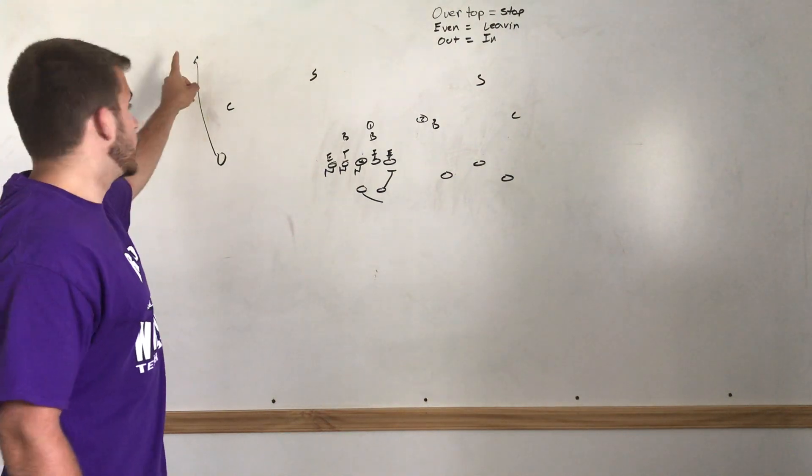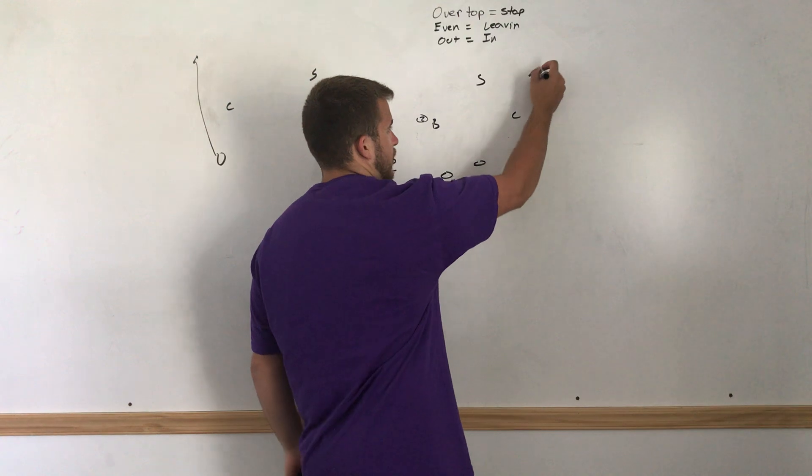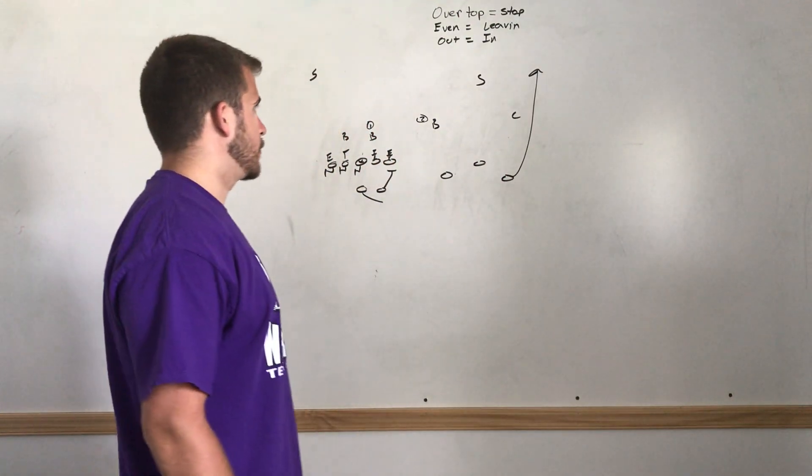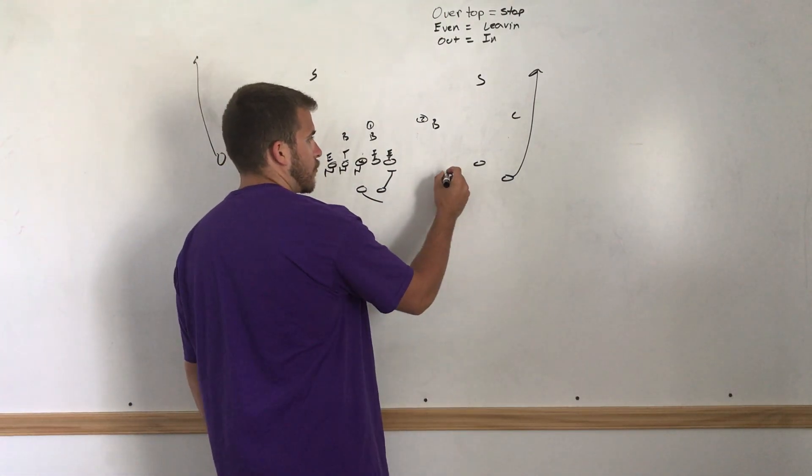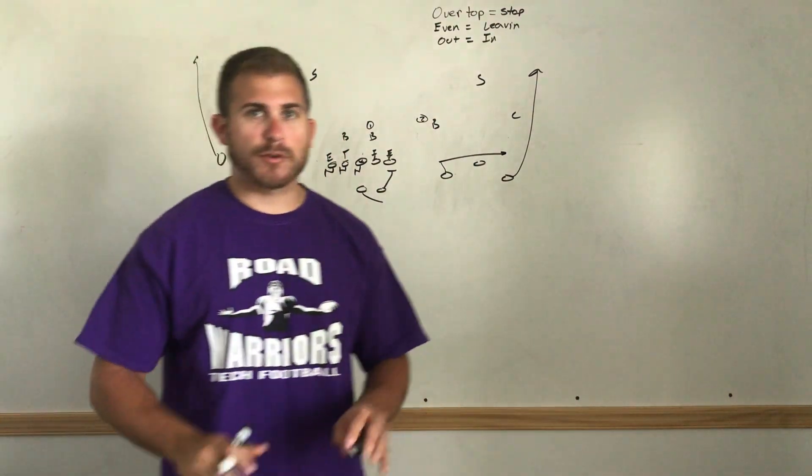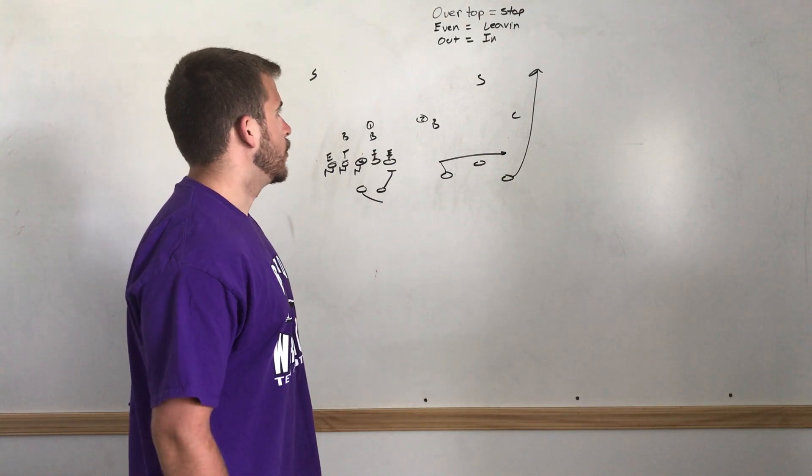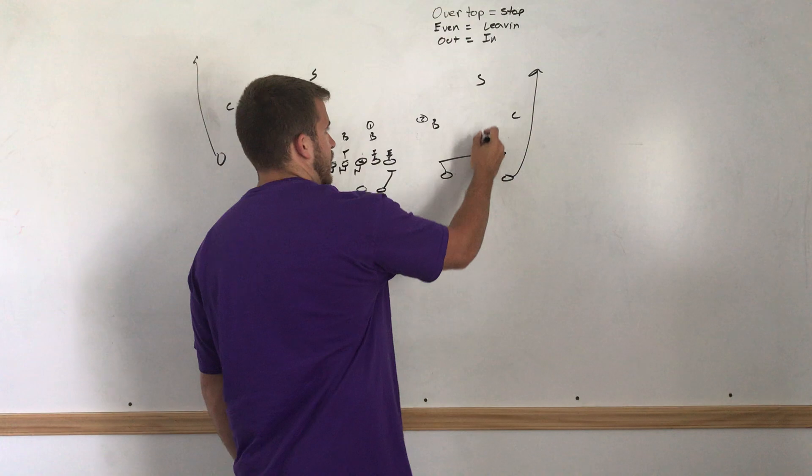So I already have this number one receiver on the backside drawn up running outside release. We're going to do the same thing on the play side, number one is running the outside release. Number three is going to run one hard drive step inside and then very hard to the flat. We don't want to be any deeper than three yards there.